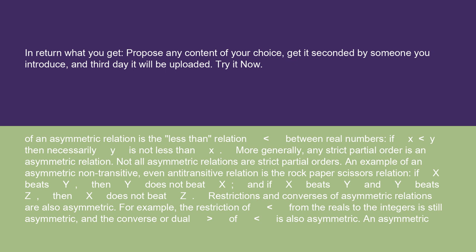An example of an asymmetric relation is the less-than relation (<) between real numbers. If x < y, then necessarily y is not less than x. More generally, any strict partial order is an asymmetric relation. Not all asymmetric relations are strict partial orders.